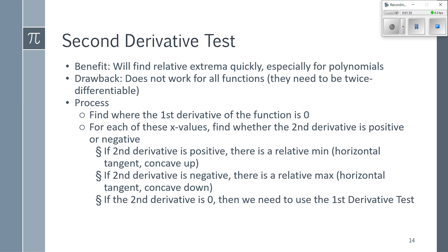The test requires horizontal tangents — if the first derivative doesn't exist, such as at a corner, the second derivative test won't catch it. If I have a horizontal tangent and my function is concave up, I have a relative minimum. If I have a horizontal tangent and my function is concave down, I have a relative maximum. If my second derivative is zero at those points, I can't use the second derivative test.